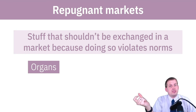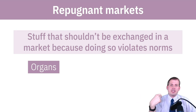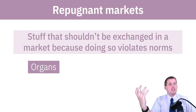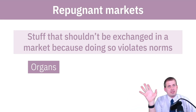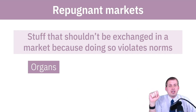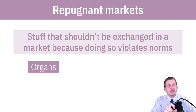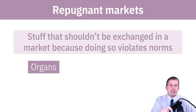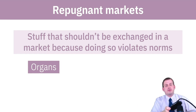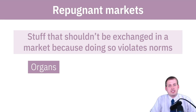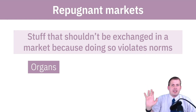Even though we have norms against this type of market, we do see it happen in real life. Steve Jobs, near the end of his life with pancreatic cancer, was on transplant lists in multiple states because he was rich and could register residency in many states. One requirement is being able to reach a hospital in that state within a certain number of hours — but because he had a private jet, he could get anywhere within that time limit, allowing him to get high up on transplant lists in multiple states due to his access to money.